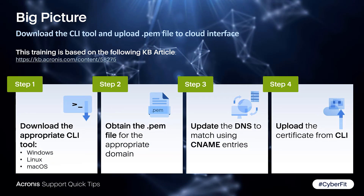There are four steps to this process. First, there is an entire KB article just on this for all the deep-dive technical details — we'll cover most of it in this video, but it's available for your reference. Step one: download a tool for the appropriate operating system. Step two: get a .pem file. Step three: update your DNS entries with a CNAME. And finally, go to the command line and run a properly configured command with that CNAME and .pem file to upload it into the cloud interface.